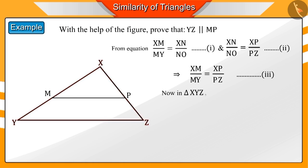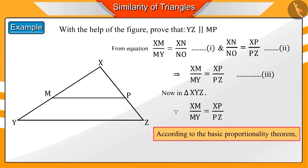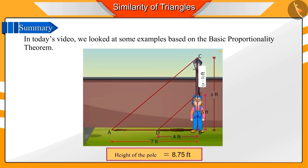Now if we look at triangle XYZ, with the help of equation 3 we can say that the line MP divides the sides XY and XZ in the same ratio. Hence according to the converse of basic proportionality theorem, we can say lines MP and YZ are parallel to each other. Today in this video we saw examples based on basic proportionality theorem.